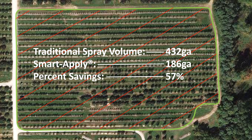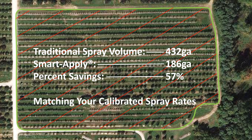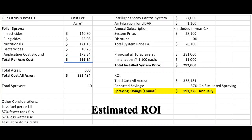The Permanent Crop Analyzer will also estimate the percent of chemical savings within the boundary if it was sprayed with the SmartApply Intelligent Spray Control System, matching your calibrated spray rates. This is then used for an estimated return on investment for the SmartApply Intelligent Spray Control System, based on your crops and annual chemical spend.